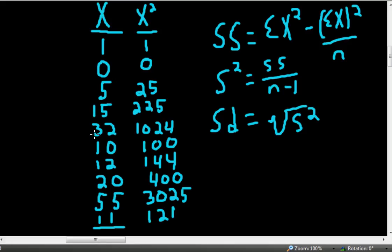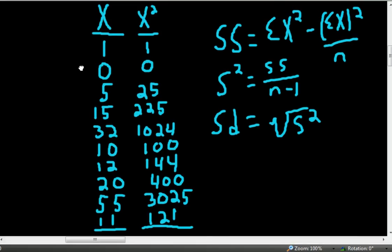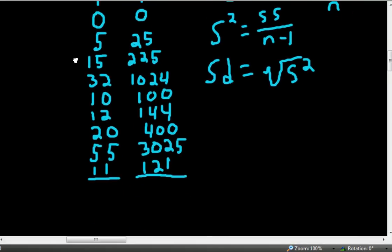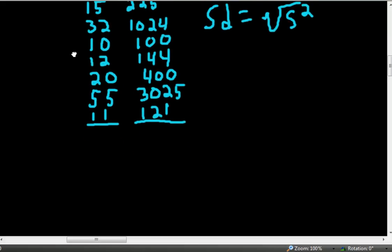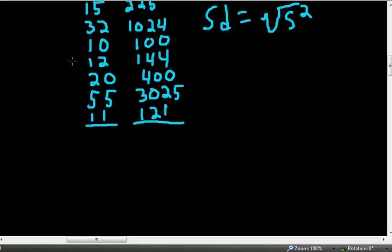After you've squared each score for x, then we need to take the sum of all those squared scores. So we'll add up all of the squared scores in the second column. Take the sum of those squared scores. So if we add up all of those scores, we should get 5065.